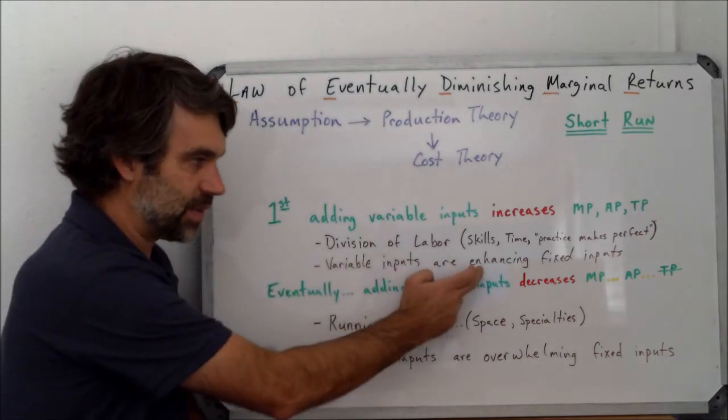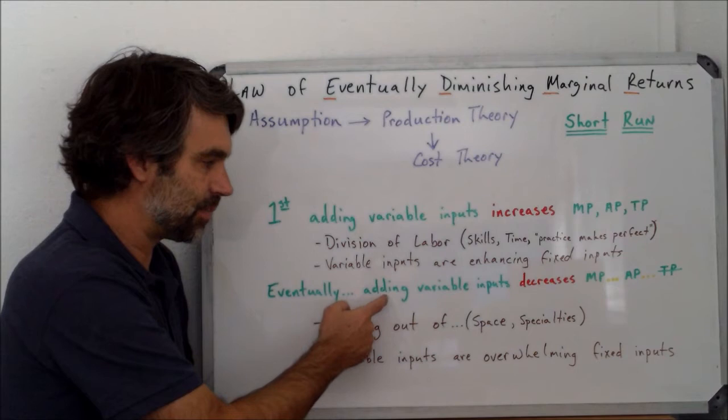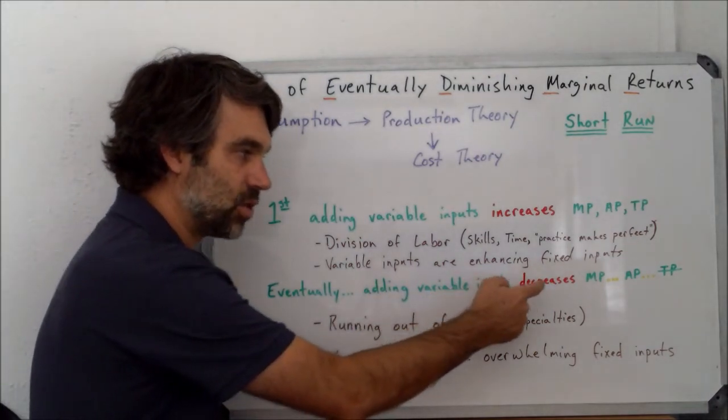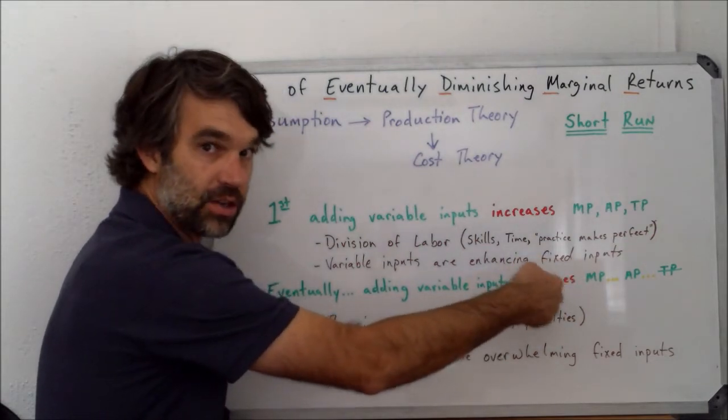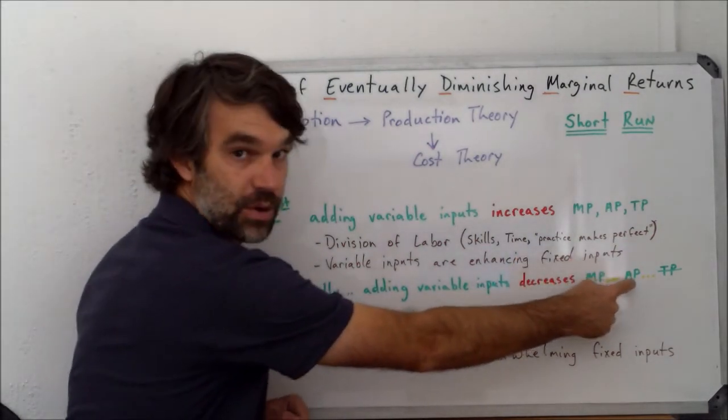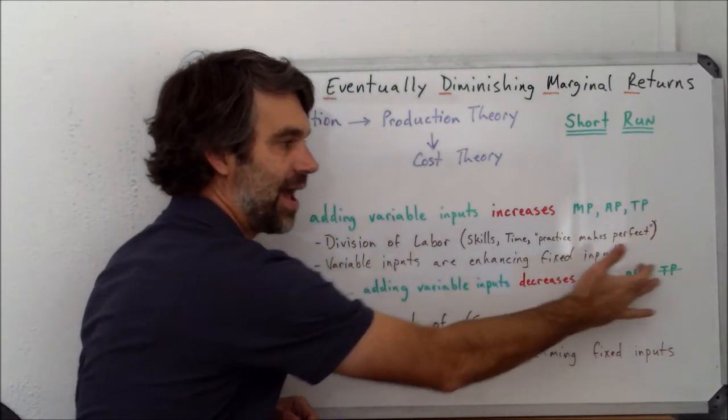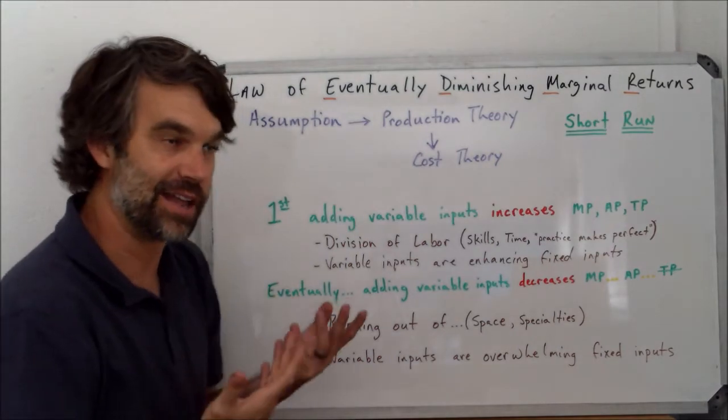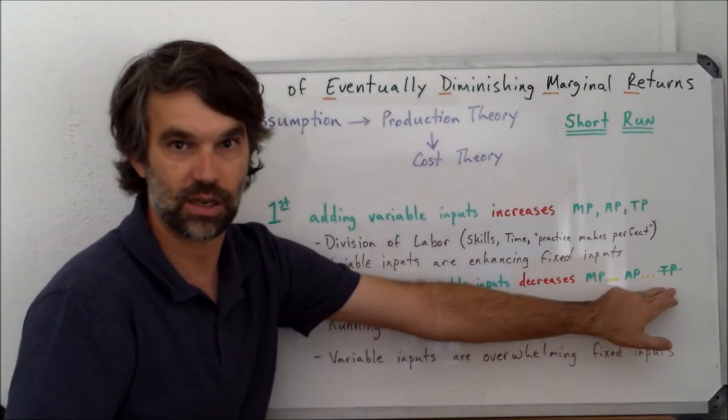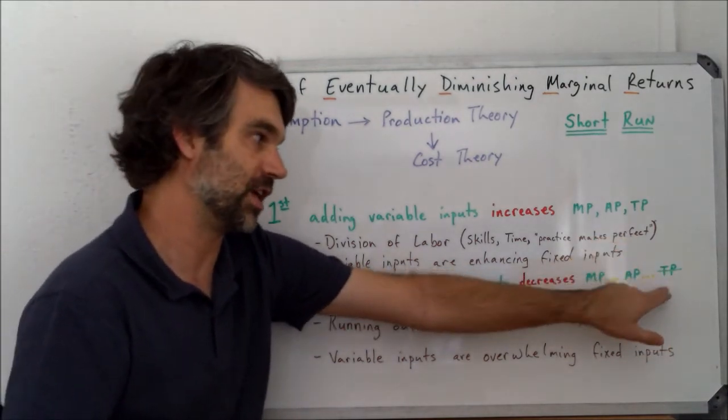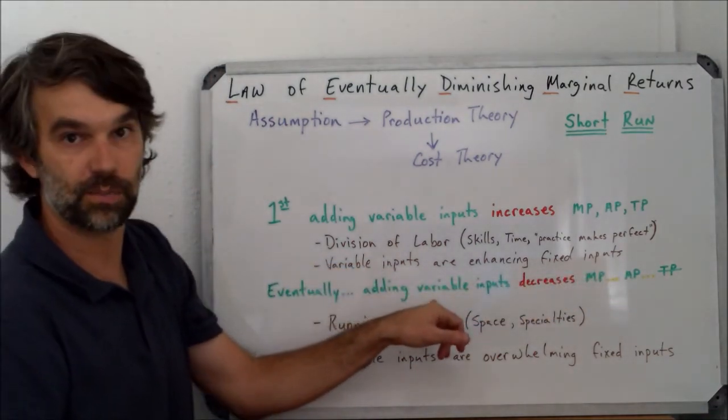Eventually, this enhancement that I was speaking of is going to run out. And what we're going to see is that by adding more variable inputs, it's going to decrease first the marginal production, then later the average production, and then maybe at some point the total production. I have that lined out because to be honest, probably we're never actually going to get there, but in the theory it does actually occur. But in real life, we probably wouldn't approach this. Probably once this starts to decline, we would stop adding the variable inputs.